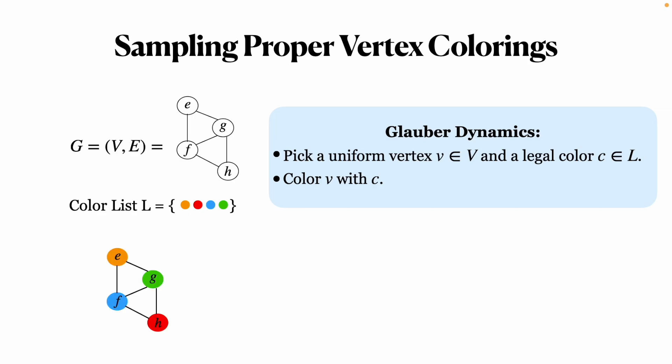The process begins at a proper coloring. At each step, we pick a vertex V uniformly at random and a legal color C for V, ensuring it does not conflict with the colors of its neighbors. For example, we pick vertex E and the red color.